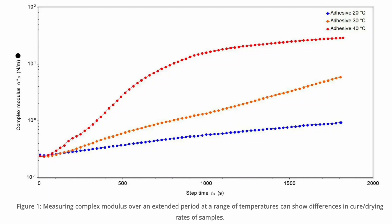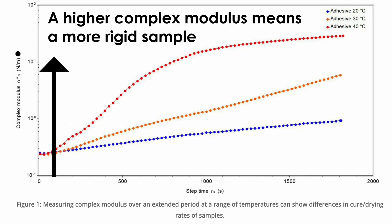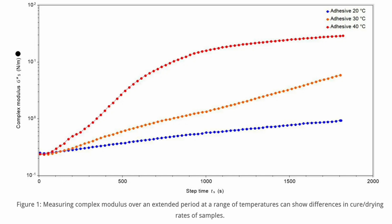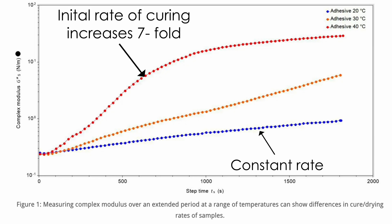For example, in this case study where a well-known adhesive was subjected to curing at a range of temperatures, the rate of change in complex modulus or rigidity can be clearly observed. At 20 degrees Celsius, the adhesive cures at a constant rate, whereas when the temperature is increased to 40 degrees Celsius, the rate of curing increased by seven times and the limit in complex modulus was reached much more quickly.